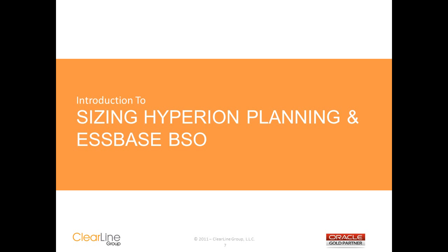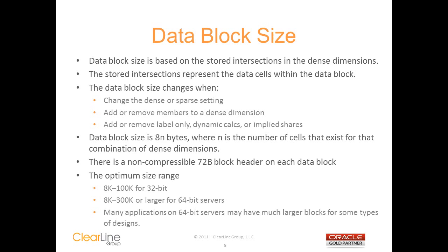We'll start by reviewing the basics of sizing Hyperion Planning and S-Base cubes. Everything starts with your outline's dense and sparse settings and the number of stored members within your outline. This will determine both the size of your data block and the maximum number of data blocks that your outline can create. The block itself is based on the stored members within the dense dimensions, and the intersections of those dense members represent the individual data cells within the block. The intersections of the sparse members represent individual data blocks. There are a number of things that can change your block size and your potential number of blocks — for example, adding or deleting members from the outline.